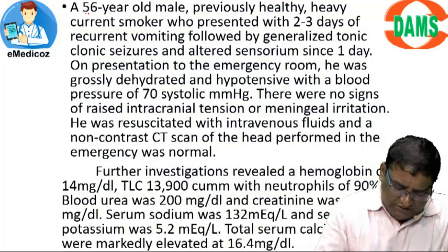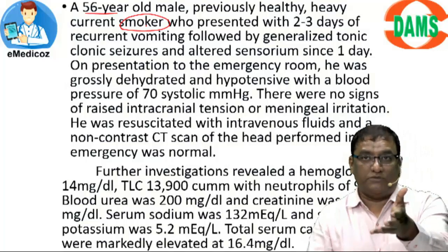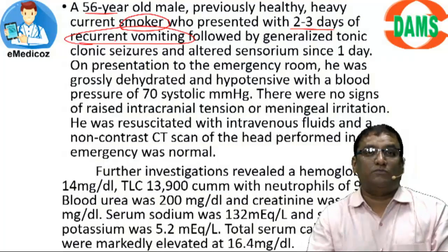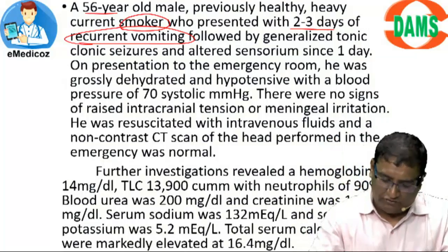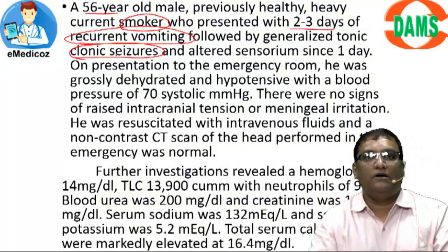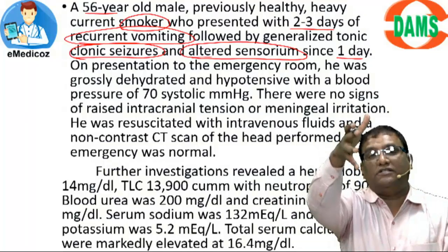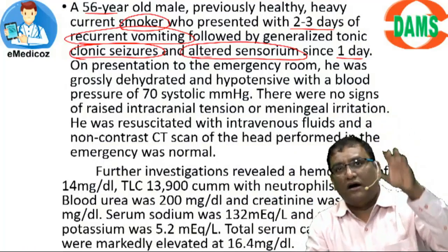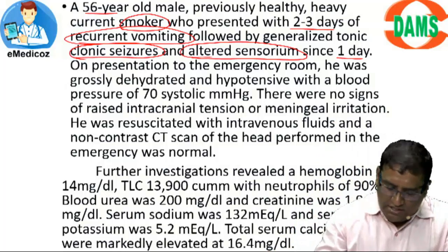The question starts: a 56-year-old male, previously healthy, heavy current smoker — for me this flags immediately because several options are associated with smoking. He presents with two to three days of recurrent vomiting — which has nothing to do with the malignancies we're considering, so I'll set that aside for now — followed by generalized tonic-clonic seizures and altered sensorium since one day. Without bias I might have thought of a CNS problem, but knowing it's likely a lung issue, I need to correlate why seizures and altered sensorium are occurring.